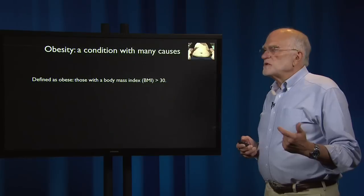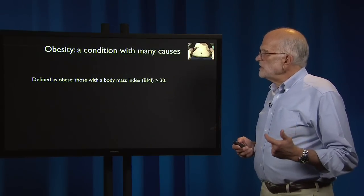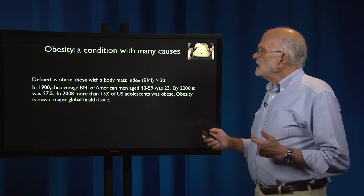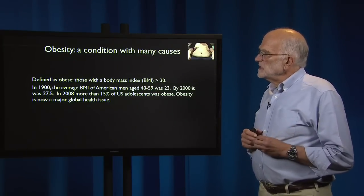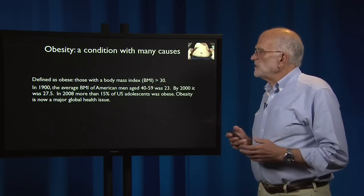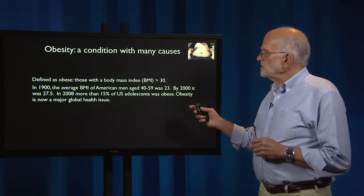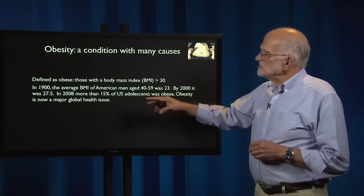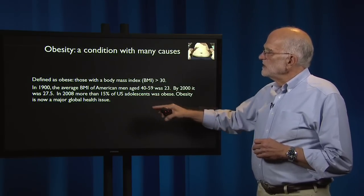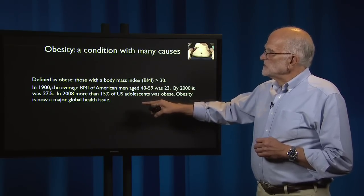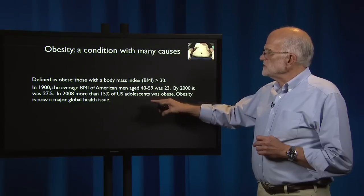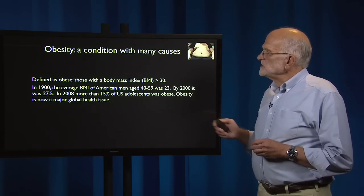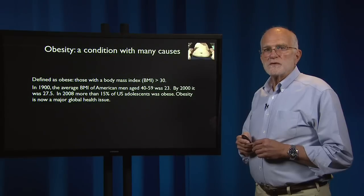The definition of someone as obese is anyone with a body mass index greater than 30. To put that in context, in 1900, the average body mass index of American men between 40 and 60 was 23. By 2000, it was 27.5. In 2008, more than 15% of U.S. adolescents were obese. Obesity is a major global health issue.